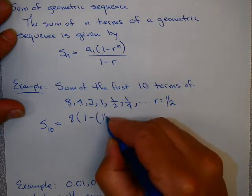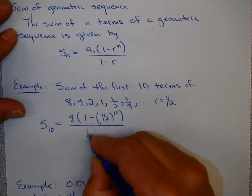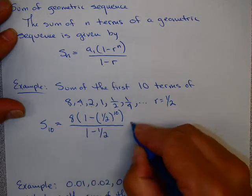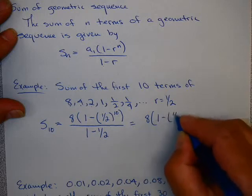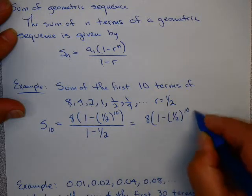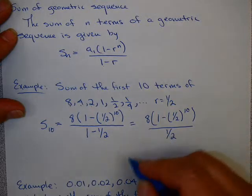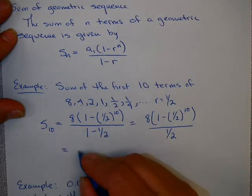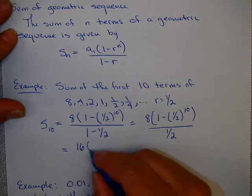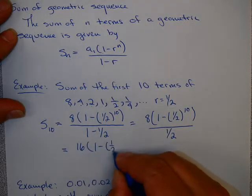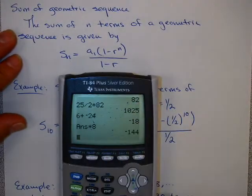So I'm going to take 1 half to the 10th power, and I'm going to put that all over 1 minus 1 half. A little bit of cleaning up here before we go on to using our calculators. This is just 1 half down here. I can move that 1 half up on top, and that will become 16 times (1 minus 1 half to the 10th).